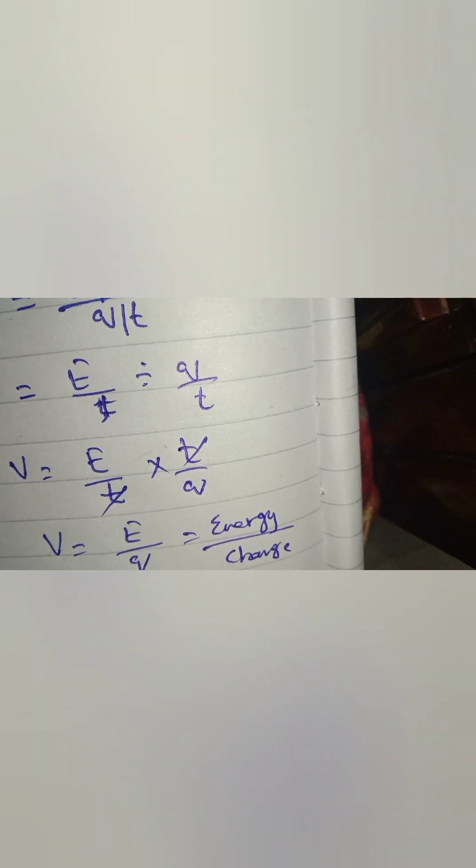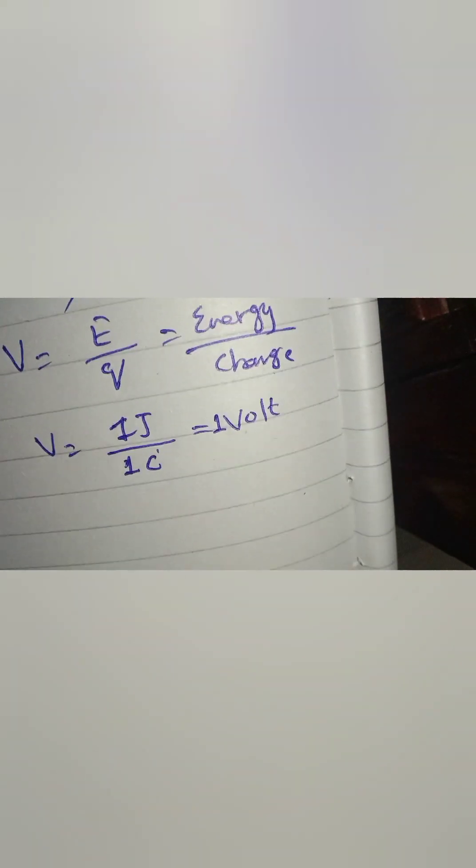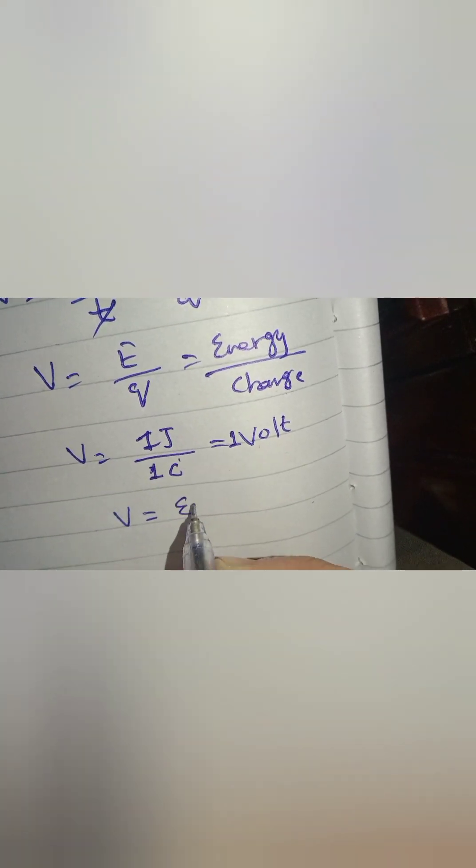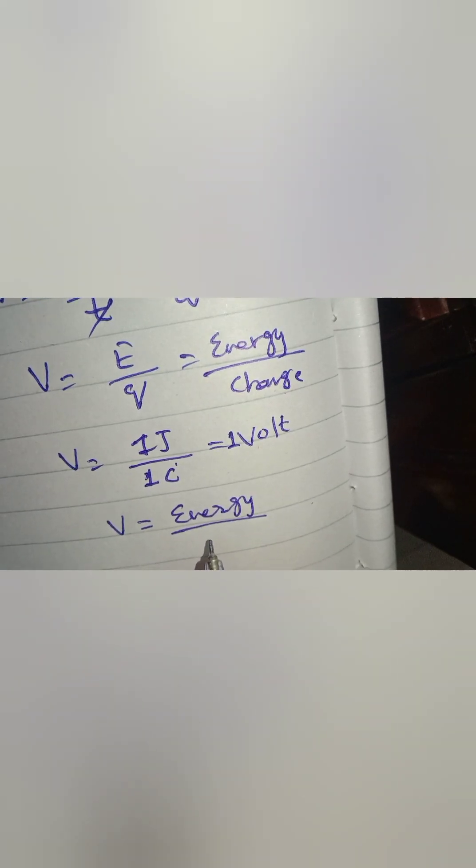The unit for charge is one coulomb, which equals one volt. So what we obtain from here is voltage equals energy per unit charge.